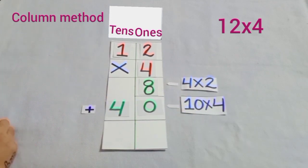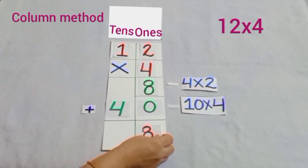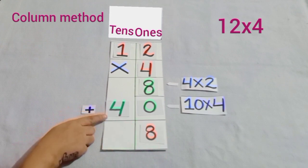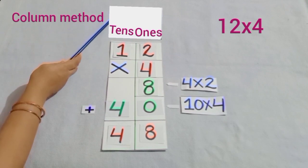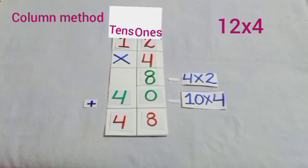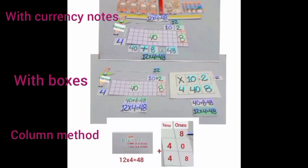Now we will add these two. And after addition, we get 8 at ones place and 4 at tens place. So we get 12 into 4 is equal to 48. We have learnt multiplication by various methods and the answer is the same by all the methods. Students, that is 12 into 4 is equal to 48.